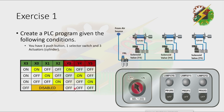Then if we turn off the selector switch, Y3, Y4, and Y5 will turn off. Let's have our demonstration. Let's turn on the selector switch. Now let's press PB1. As you can see, Y3 turns on and it will remain on.